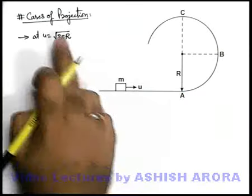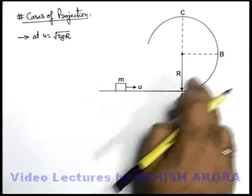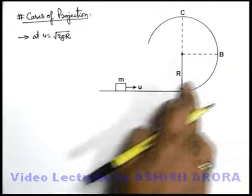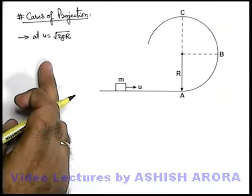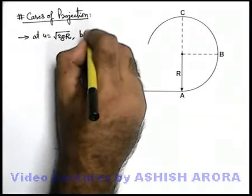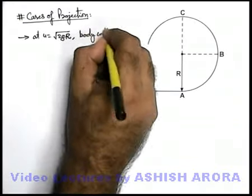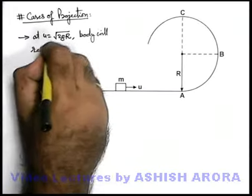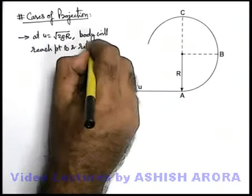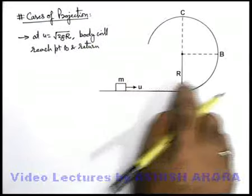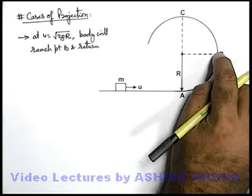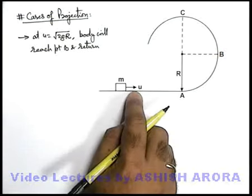We know very well that at u = √(2gr), a simple pendulum goes up to the position where the string becomes horizontal and then it returns back. The same phenomenon takes place here. At u equal to √(2gr), the body will reach point B and return. It reaches the position where the angle at which the velocity becomes zero is ninety degrees, and then it comes back.